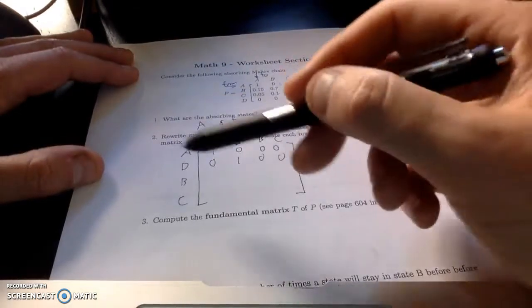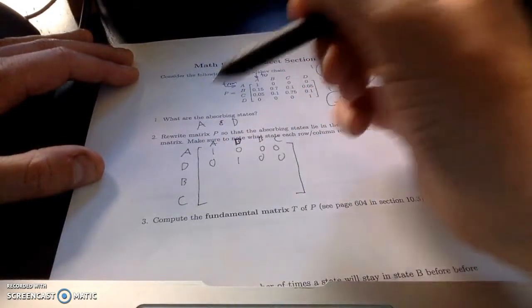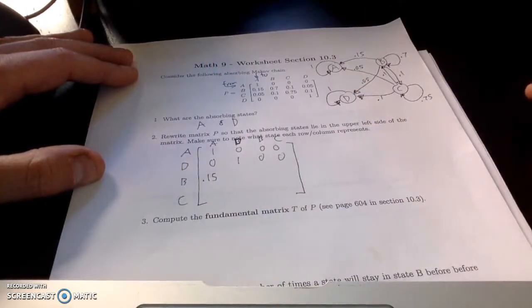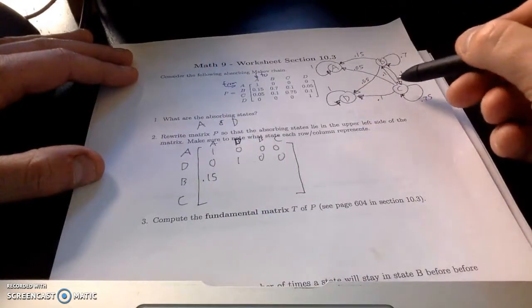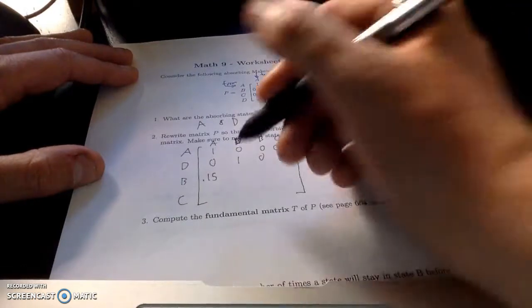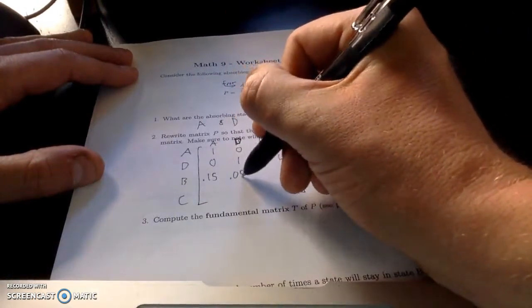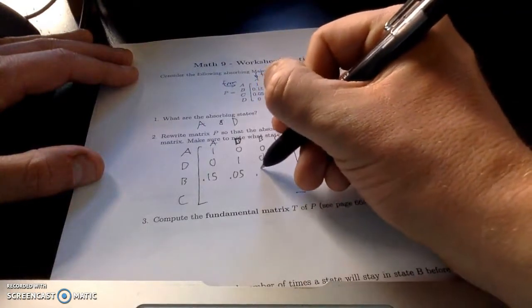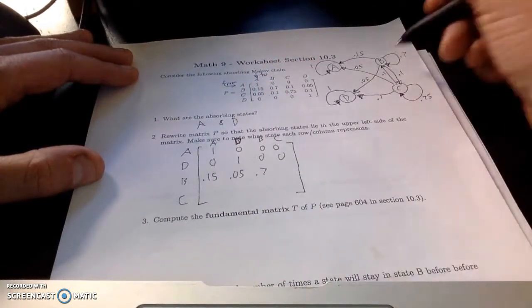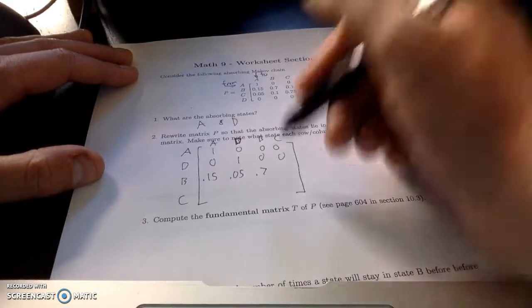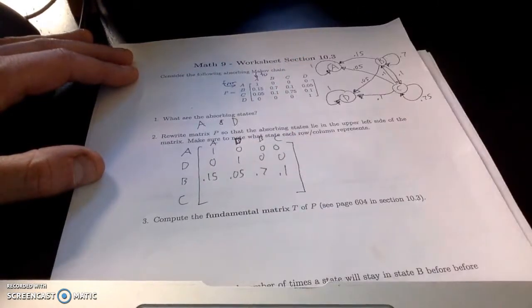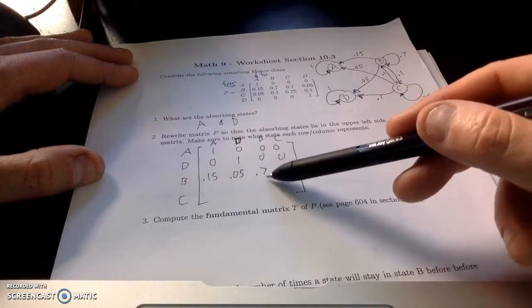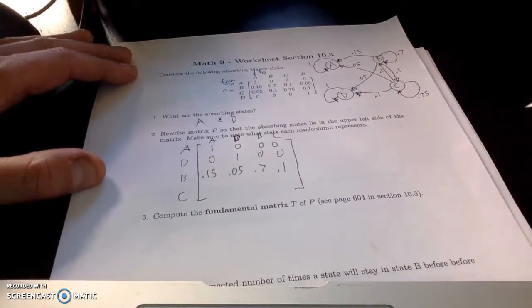B, on the other hand, I'm going to be careful. B maps to A at a 0.15% probability. B moves from B to D at a 0.05%. B stays in state B, 70% probability. And B could also move to state C at 10%. And don't forget the quick check. I should be able to add these numbers, 15, 20, 90, 100, to get 100%.